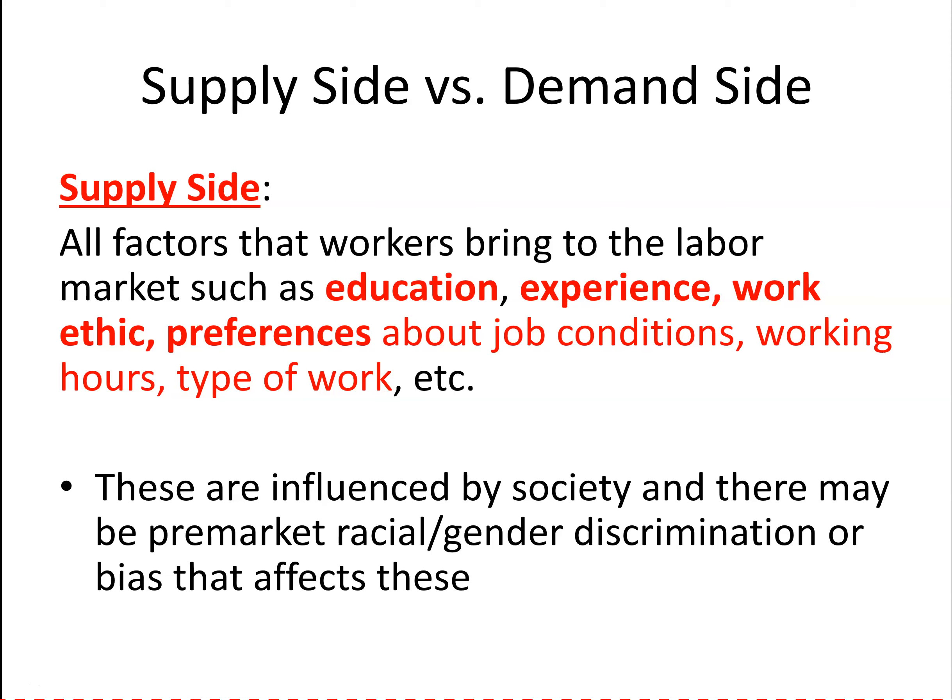Preferences include things like job conditions, working hours, and type of work. The supply side also includes things like work ethic, which is notoriously difficult to measure, so for the most part we won't be talking about that. These factors are all influenced by society, so even though we're going to kind of take them as given, they may be influenced by social norms, social perceptions, and there also might be what we call pre-market racial or gender discrimination, which affects these factors.